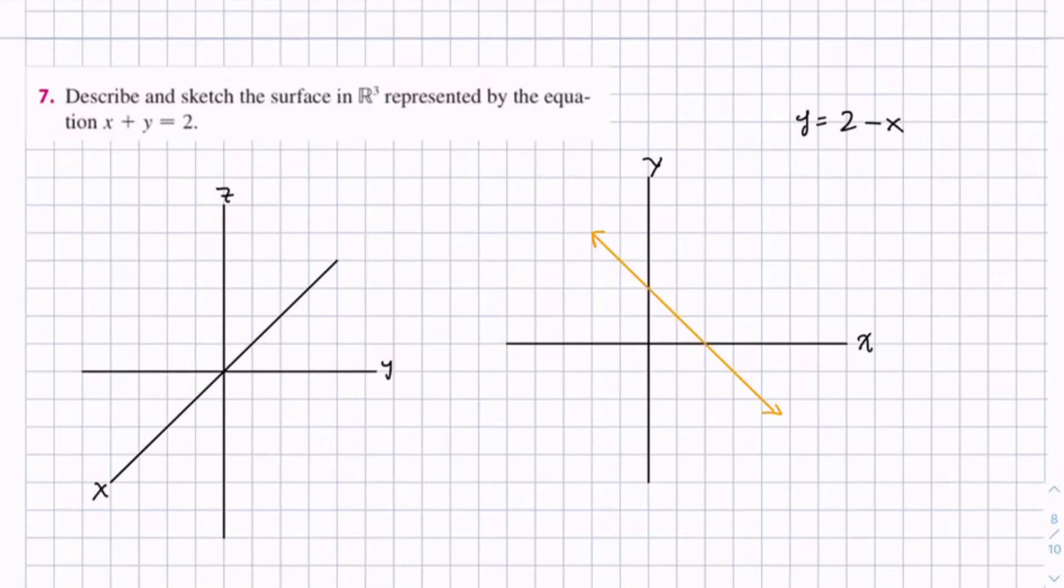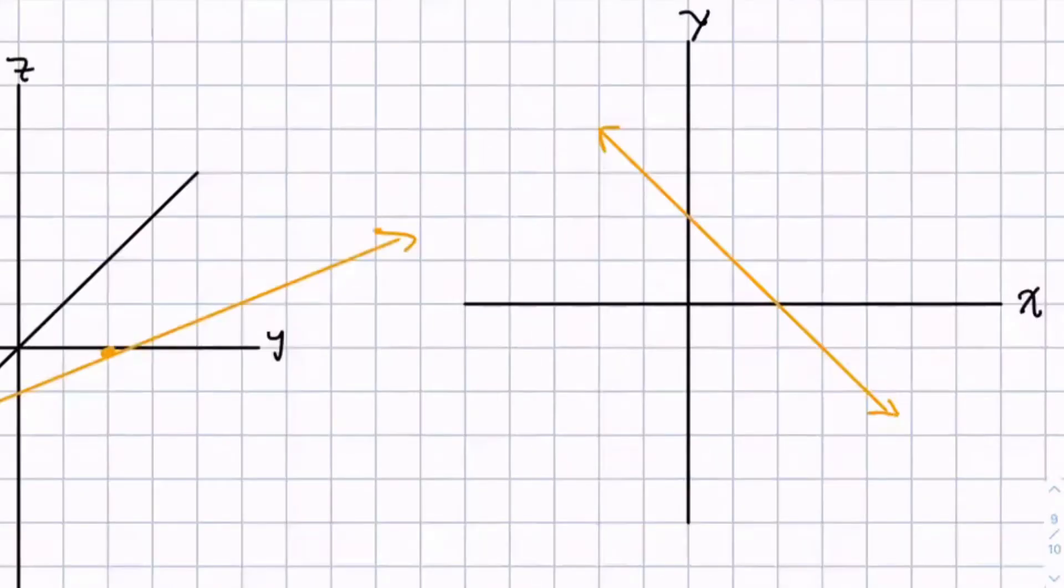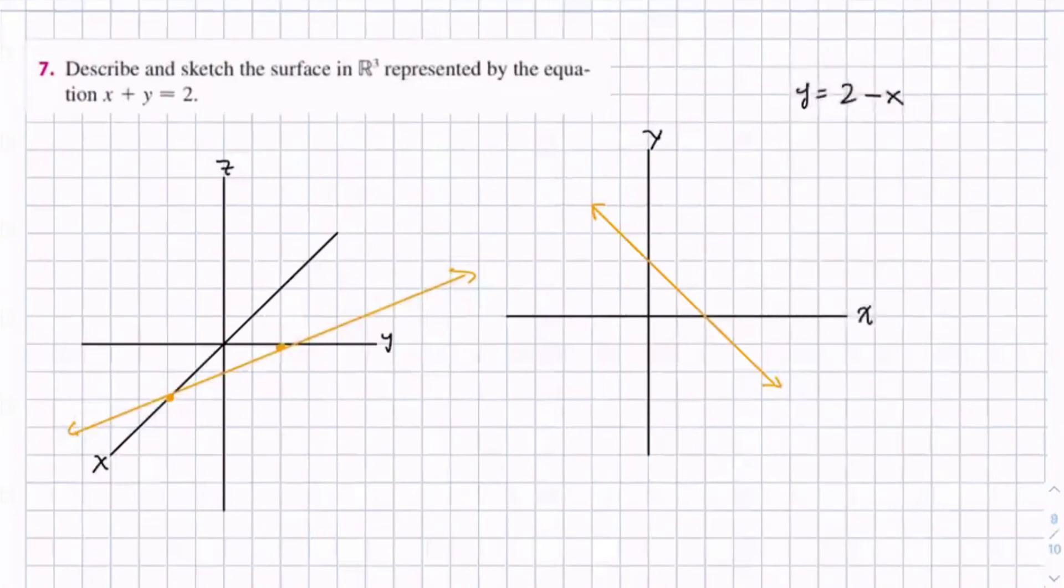So let's just draw this line on this graph. It looks something like this. However, remember earlier I mentioned that z is unbounded, so z can equal anything. So this creates a plane. This plane goes up forever and down forever, so you have this plane.